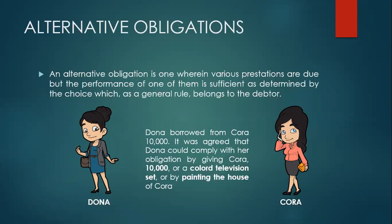Even if Donna did not deliver a colored television set, or Donna did not paint the house of Cora, because again, under alternative obligation, there are various prestations which are due, but the performance of one of them is sufficient to extinguish the obligation.